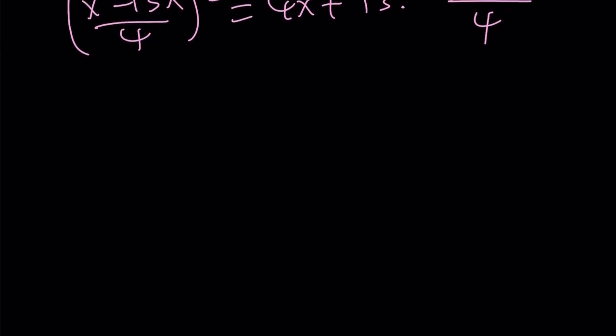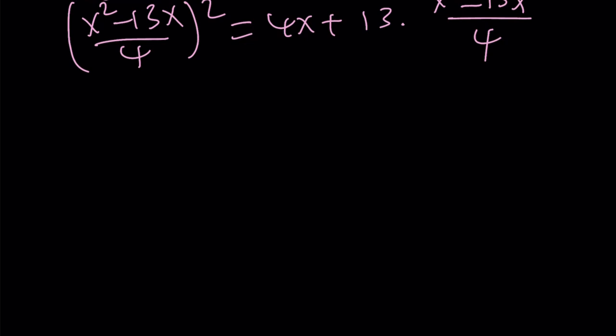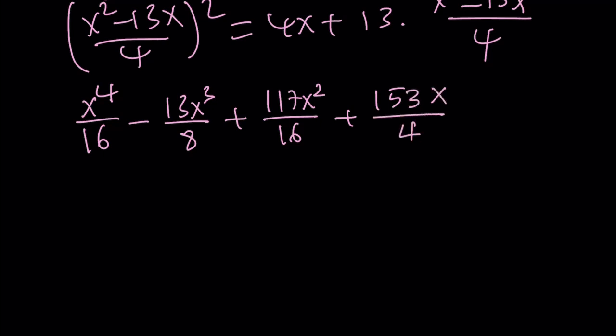And if you expand it without making a common denominator, this is what it looks like. x to the fourth power divided by 16 minus 13x to the third divided by 8 plus 117x squared divided by 16 plus 153x divided by 4 equals 0. First of all, I want you to notice a couple things.